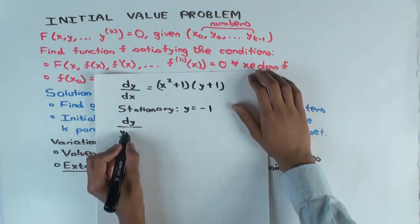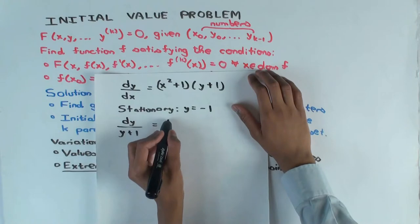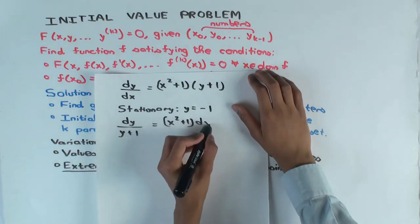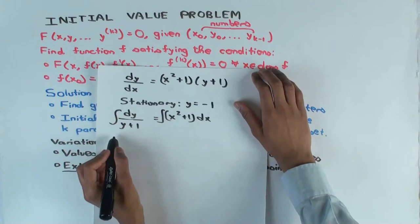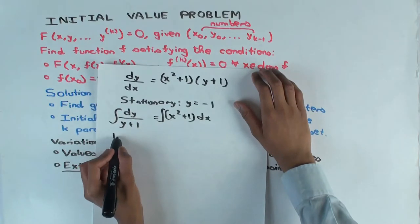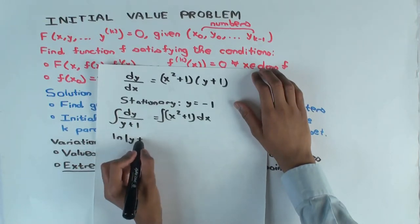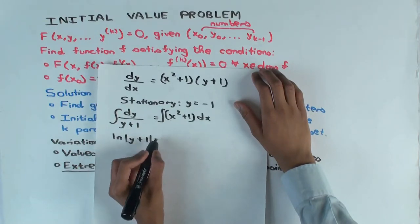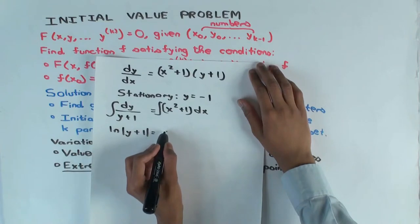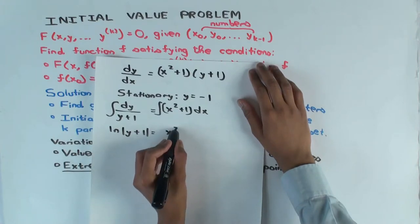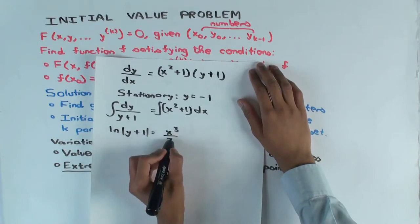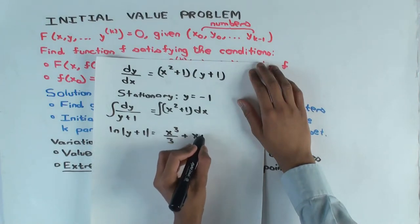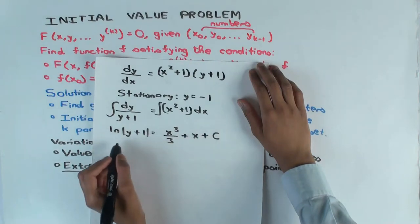Let's now try to find the non-stationary solution. You'll get ln|y + 1| equals one-third x cubed plus x.